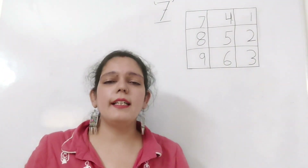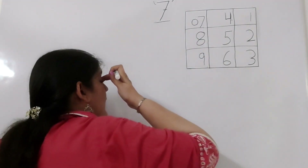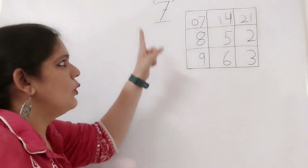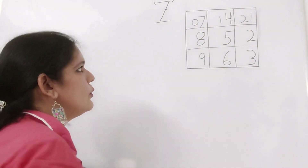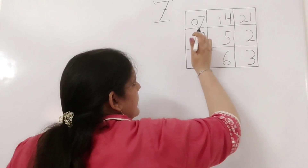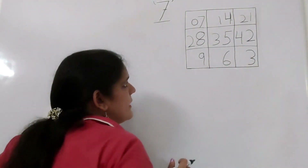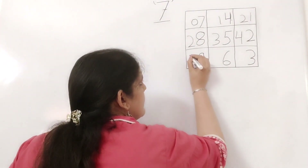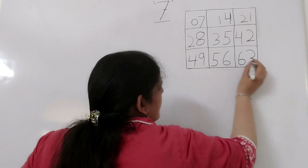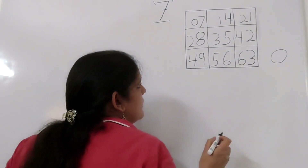Now what we will do for the tens place is we will write 0 here, then 1 and 2 — counting 0, 1, 2. Next, we will copy the same tens digit to the next row, that is copy the 2, then 3, then 4. Like earlier, we will copy this 4 to the next row and then 5 and 6.